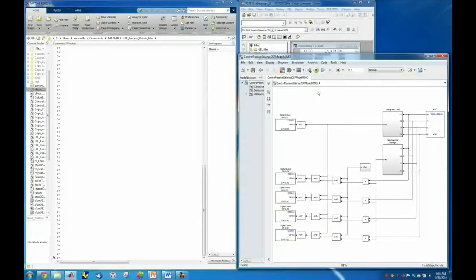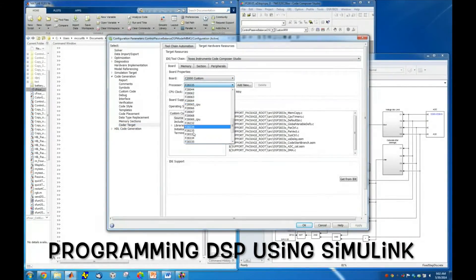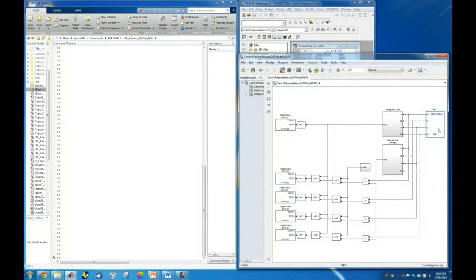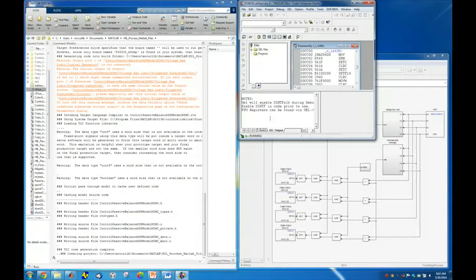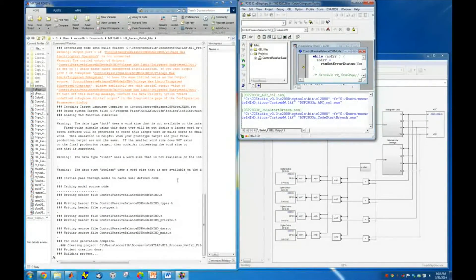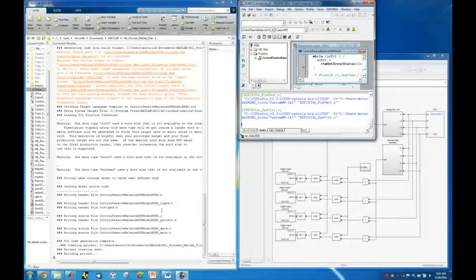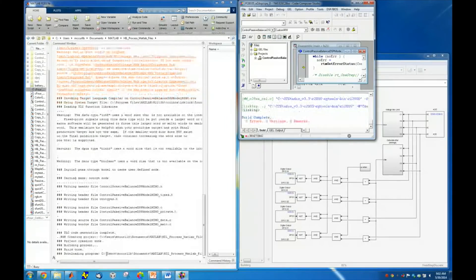We use Simulink in order to generate C code for our DSP. This is done by using the automatic code generation tab located in the configuration parameters. Once a code or target is selected, Simulink can build and run programs onto the DSP. Board-specific blocks can be added to Simulink's library in order to take full advantage of the DSP. This includes digital inputs, outputs, analog-to-digital converter, as well as pulse width modulation.